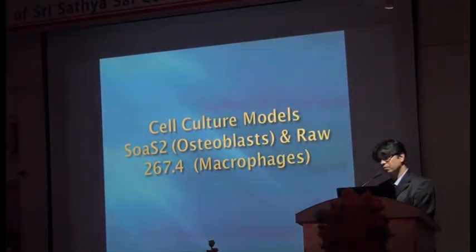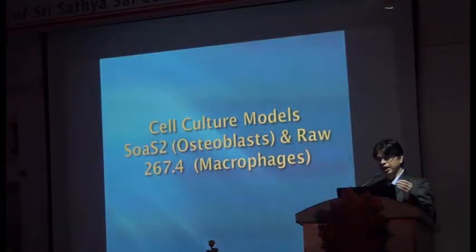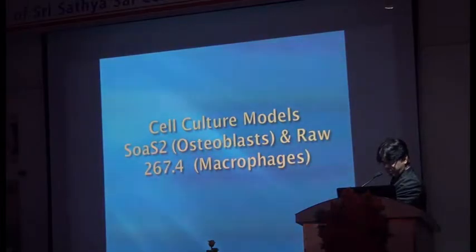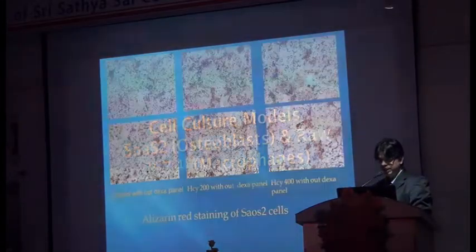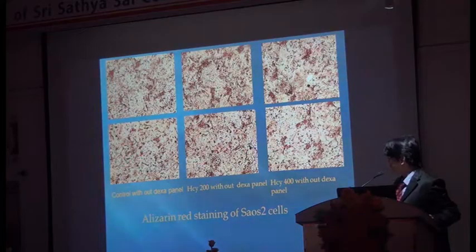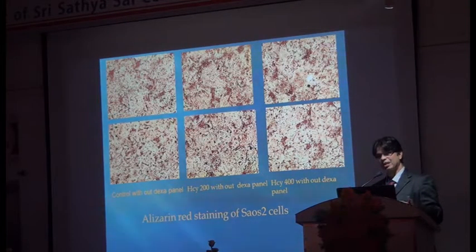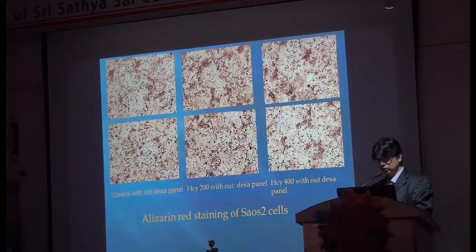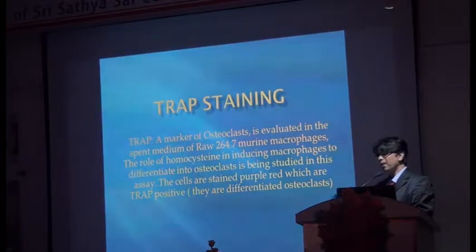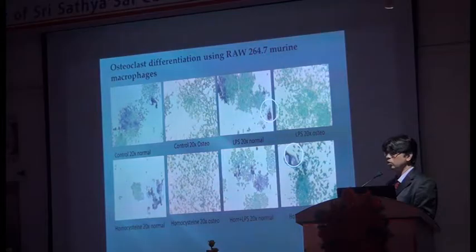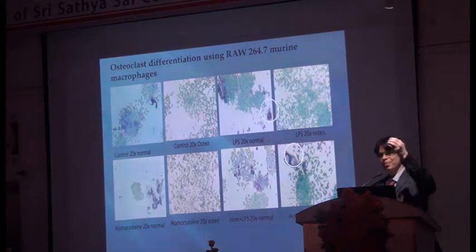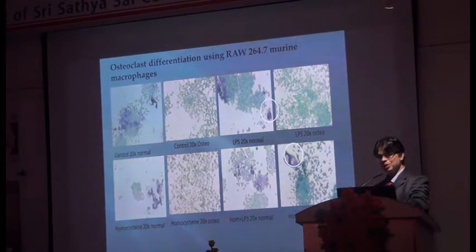Then we went on to cell culture models. We used an osteoblast cell line and RAW cells — the murine macrophage cell line. We treated the osteoblast solution with homocysteine, took the supernatant, and put it in the RAW cell line. What happened was the osteoblast itself was not affected at all by homocysteine — it remained the same in alizarin staining. But the osteoblasts released RANKL — a receptor activator of NF-κB ligand — which converted macrophages into osteoclasts, leading to osteoclastogenesis.